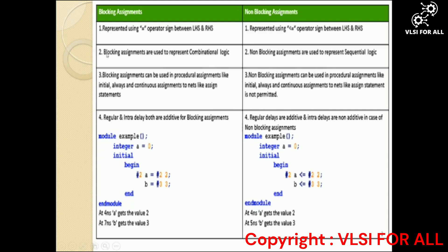The second difference is that blocking assignments are used to represent combinational logic, while non-blocking assignments are used to represent sequential logic. The third difference is that blocking assignments can be used in procedural assignments like initial, always, and continuous assignments to nets like assign statements, whereas this is not permitted for non-blocking assignments.